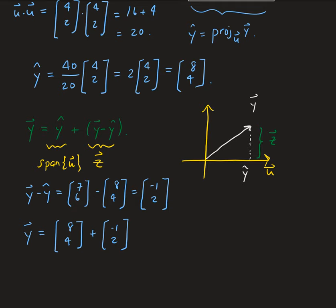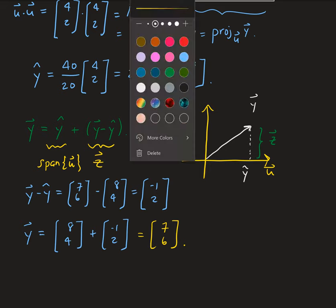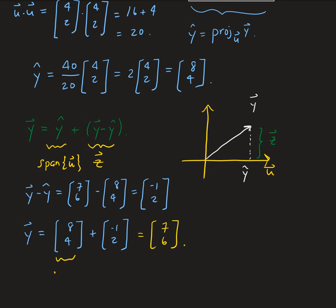So we wrote y in terms of a vector in the span of u, which was y-hat [8, 4], plus the difference y minus y-hat, which is [-1, 2], and that component is orthogonal to u. That's our solution.